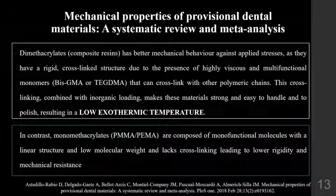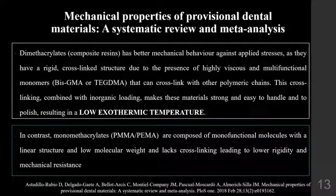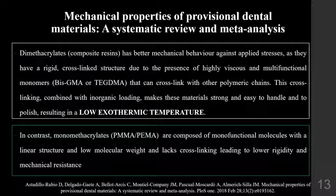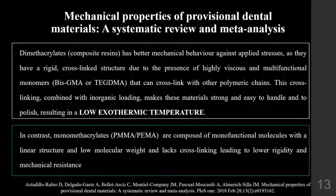In a systematic review assessing mechanical properties of provisional materials, dimethacrylate or composite resins showed better mechanical behavior when stress is applied, because they are rigid and have a cross-linked structure due to the presence of highly viscous and multifunctional monomers, which cross-link with the polymeric chain. This cross-linking makes these materials strong and easy to handle, resulting in low exothermic temperature. Monomethacrylates are composed of monofunctional molecules with a linear structure and low molecular weight, which lacks cross-linking, leading to lower rigidity and mechanical resistance.